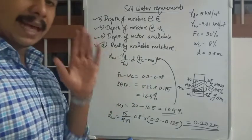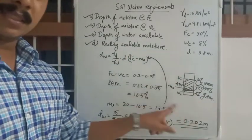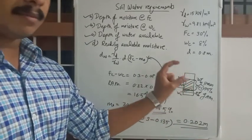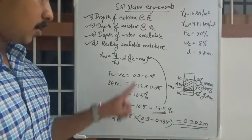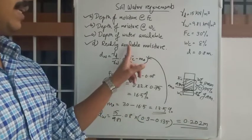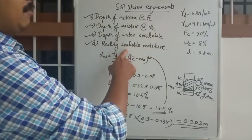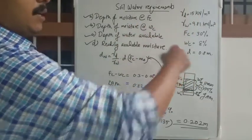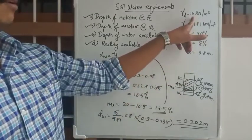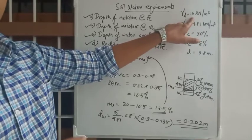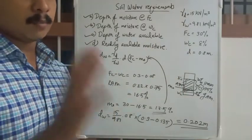To summarize: for readily available moisture, the equation is dw = (γd / γw) × d × (FC − M0). If M0 is directly given, just substitute it. If not given but FC and WC are given, calculate M0 using the fact that readily available moisture is the top 75% of available moisture. γw will generally not be given in the question since we already know it as 9.81; γd will vary and must be given.